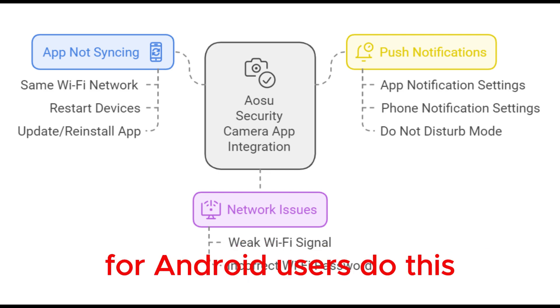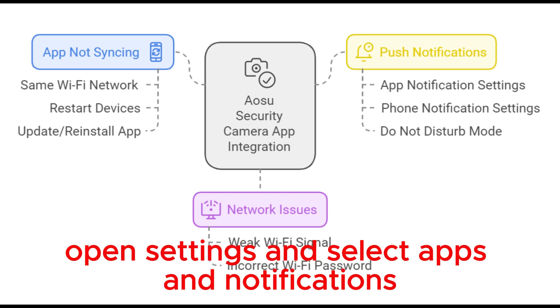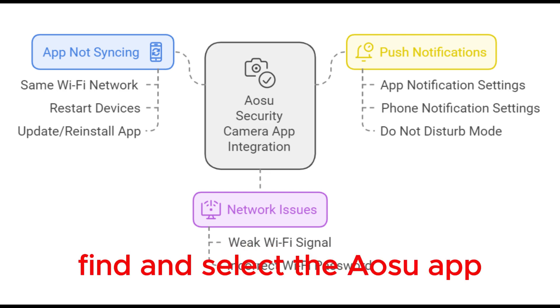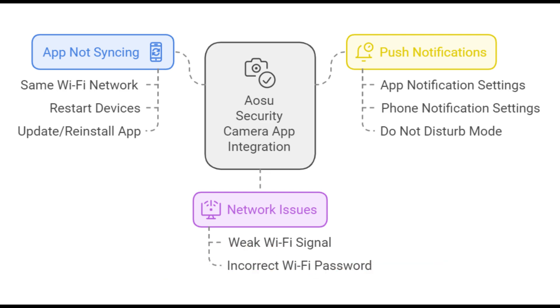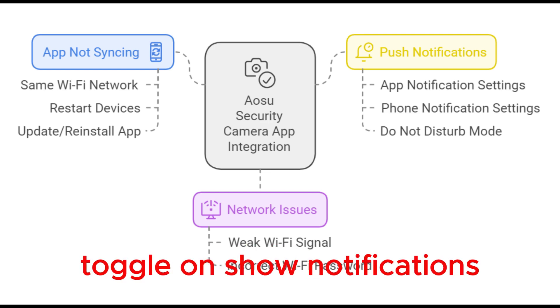For Android users, do this. Open Settings and select Apps and Notifications. Find and select the Aosu app. Toggle on Show Notifications.